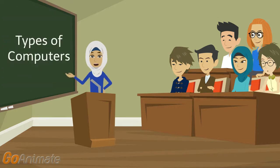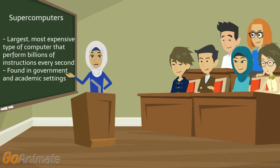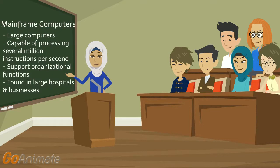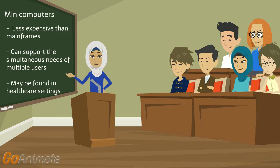Now we'll talk about the types of computer — an important topic, especially when you are going to buy a computer. The first type is the supercomputer, the largest and most expensive type, which performs billions of instructions every second and is found in government and academic settings. The second type is the mainframe computer, a large computer capable of processing several million instructions per second, supporting organizational functions found in large hospitals and businesses.